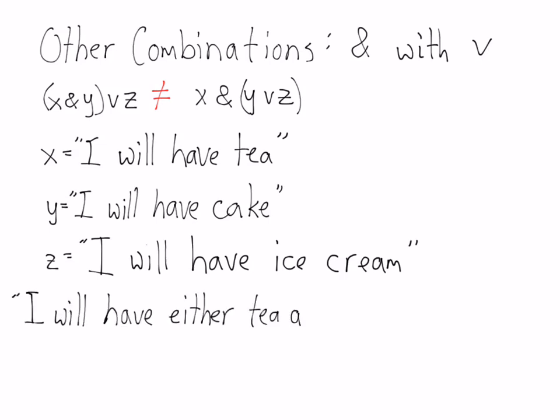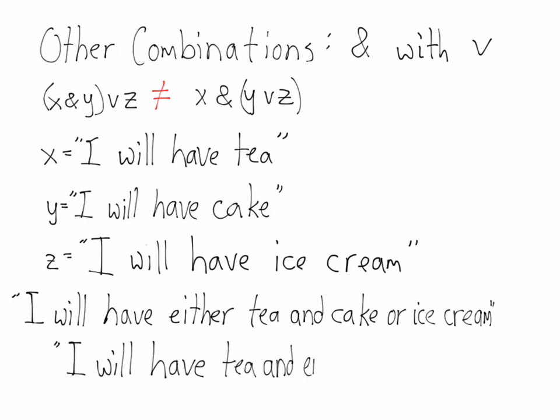You can say 'I will have either tea and cake or ice cream,' which means if you don't have ice cream, then you'll have both tea and cake. A different sentence is 'I will have tea and either cake or ice cream.' Notice now that the word 'either' is in front of 'cake or ice cream,' whereas in the first sentence the 'either' was in front of 'tea, cake, and ice cream.'